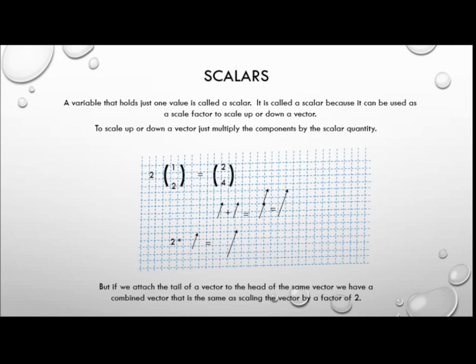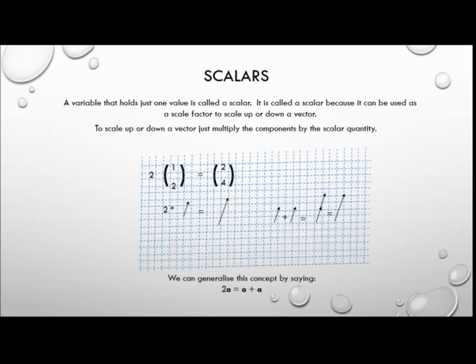So adding a vector to itself is the same as scaling it up by a factor of 2. We can generalize this concept by saying 2 times vector a is equal to vector a plus vector a, where a can be any vector.